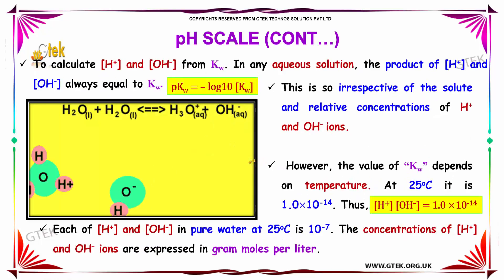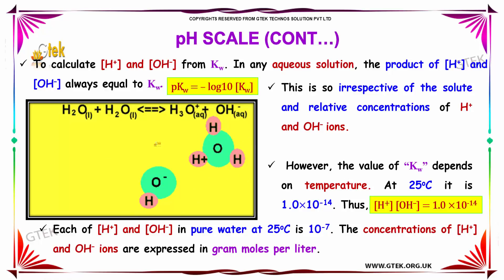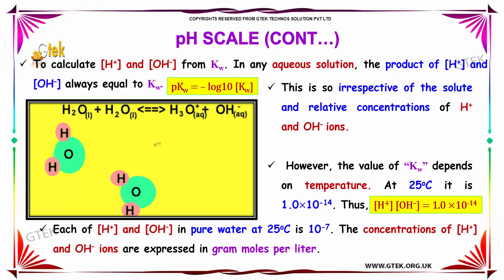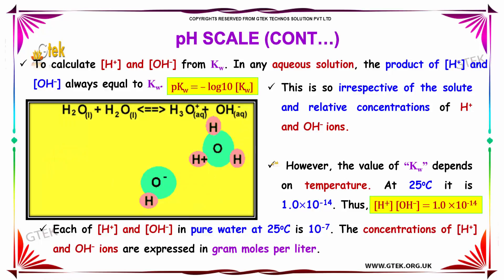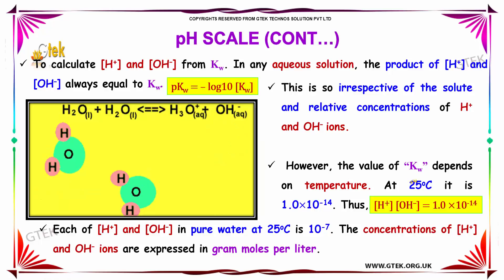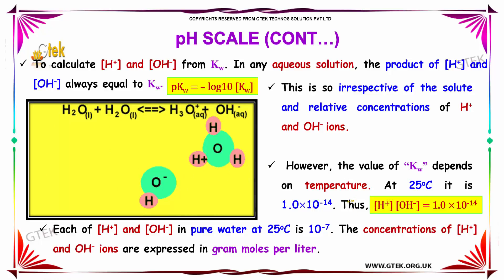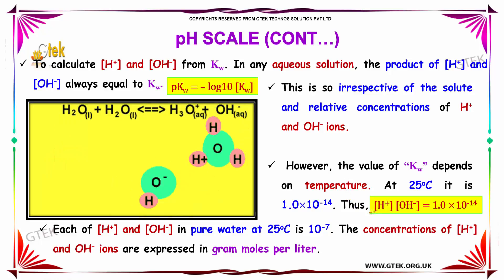To calculate the H+ and OH- concentrations from the equilibrium constant in any aqueous solution, the product of H+ and OH- will be equal to 10^-14, multiplied by the concentration of water. This is so irrespective of the solute and the relative concentrations of H+ and OH- ions. However, the value of the equilibrium constant of water depends on temperature. At 25 degrees Celsius, it is 10^-14. Thus, the product of concentrations of H+ and OH- will always equal 10^-14.